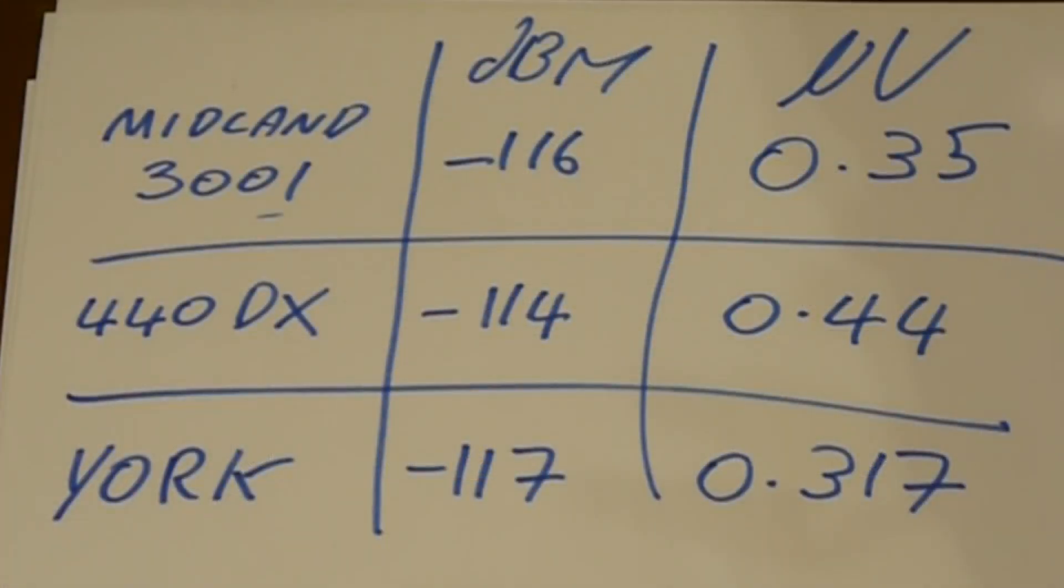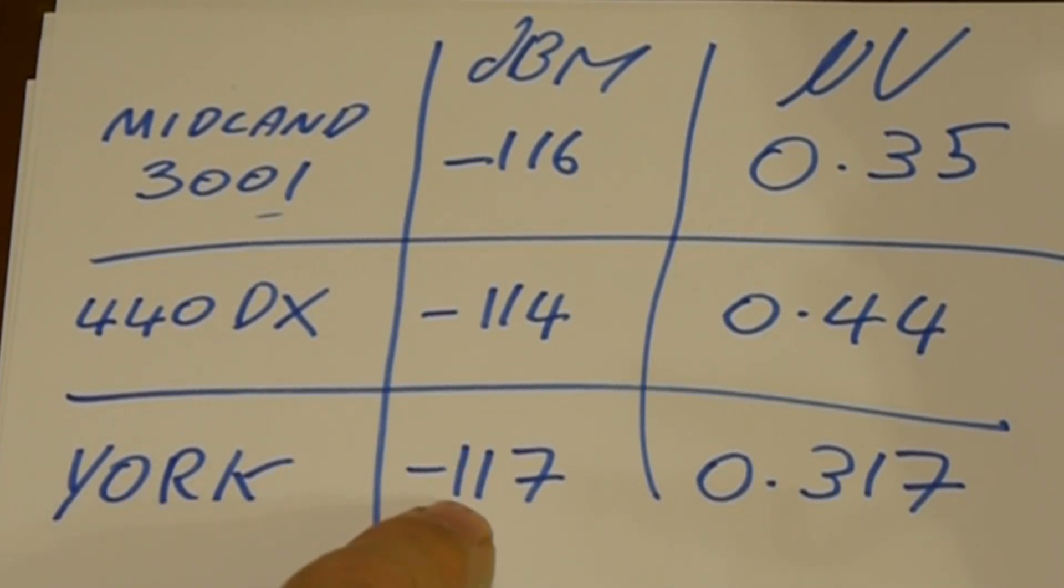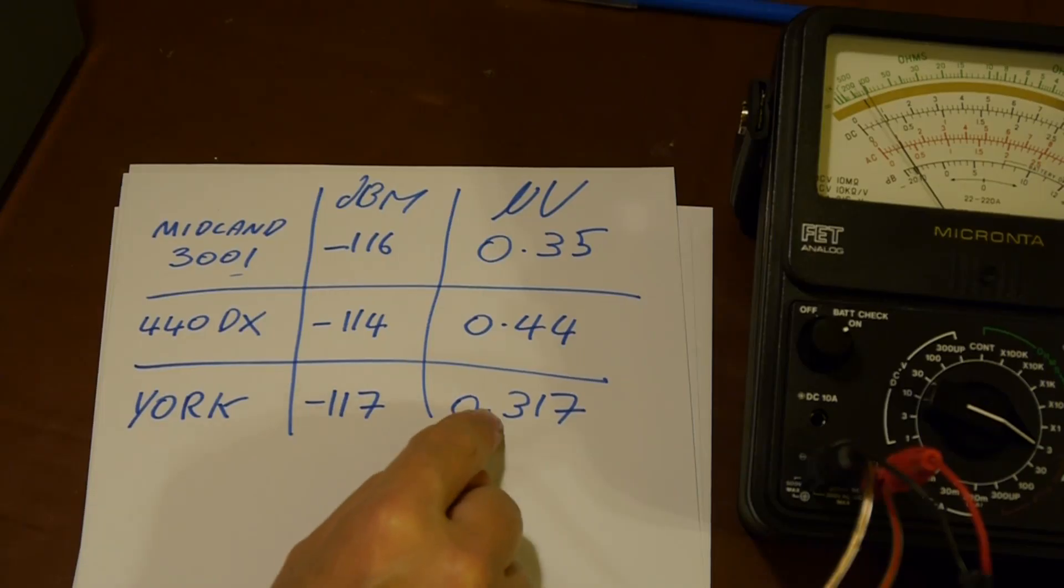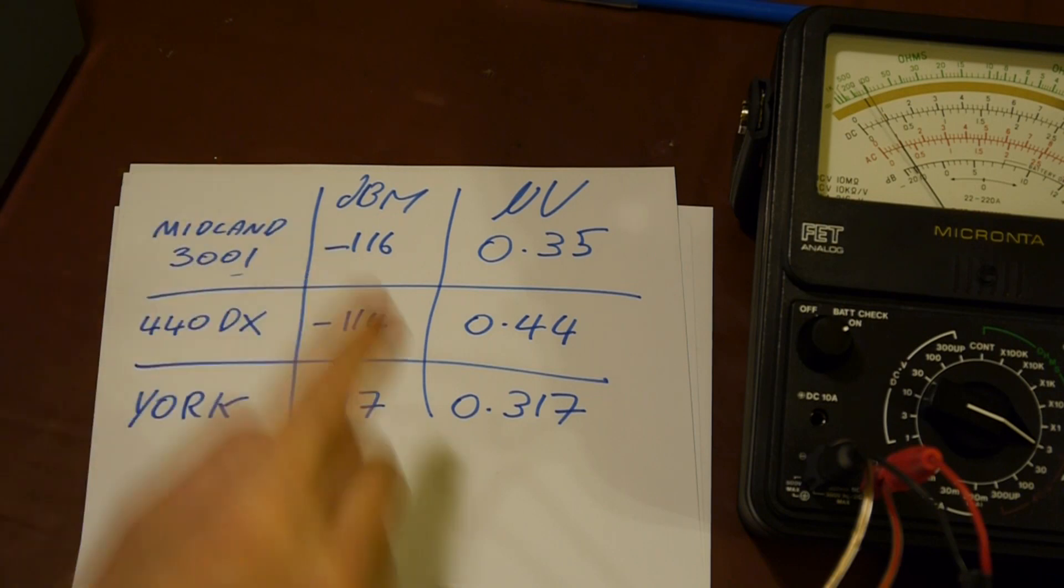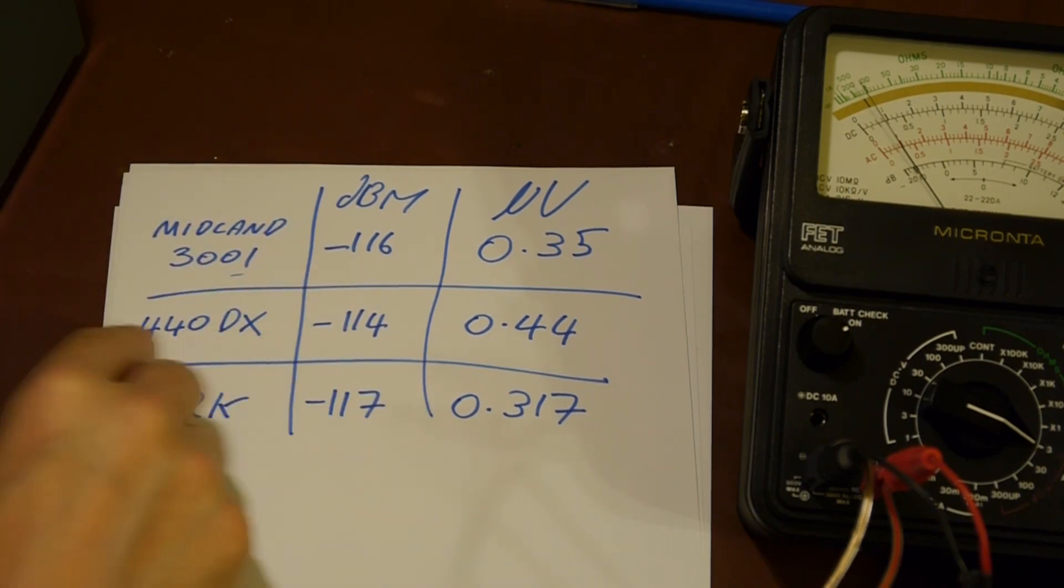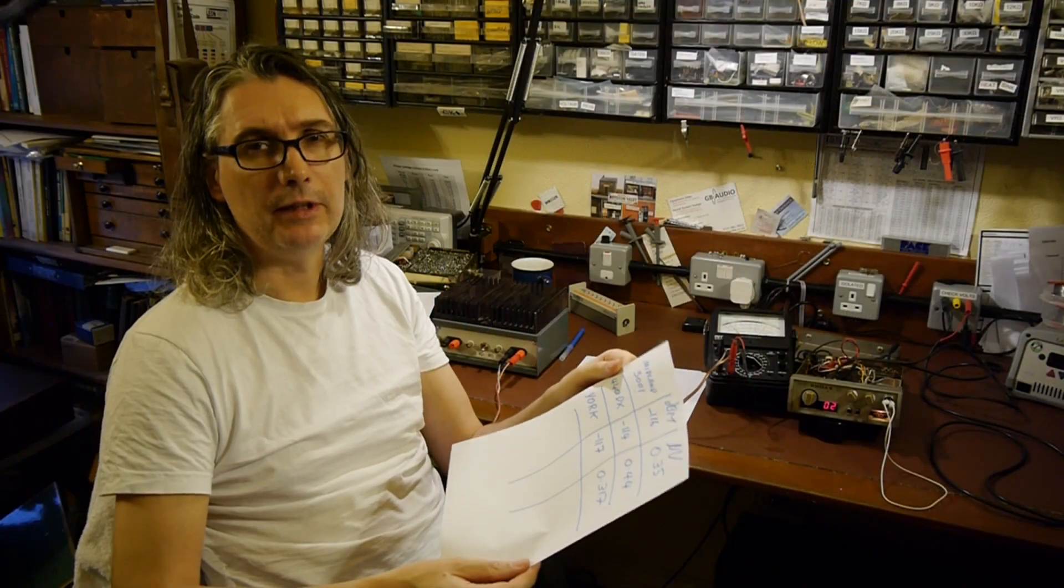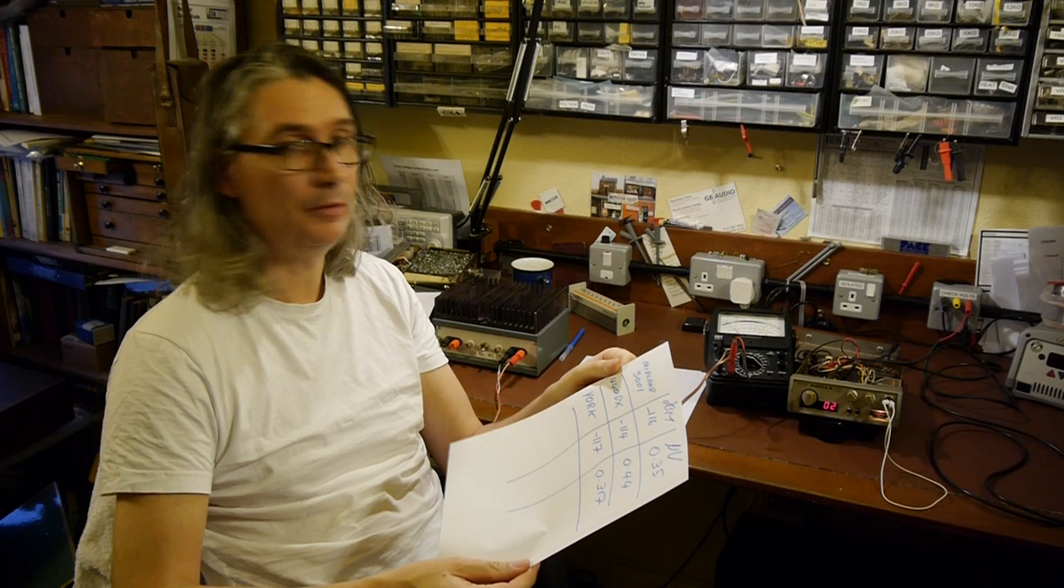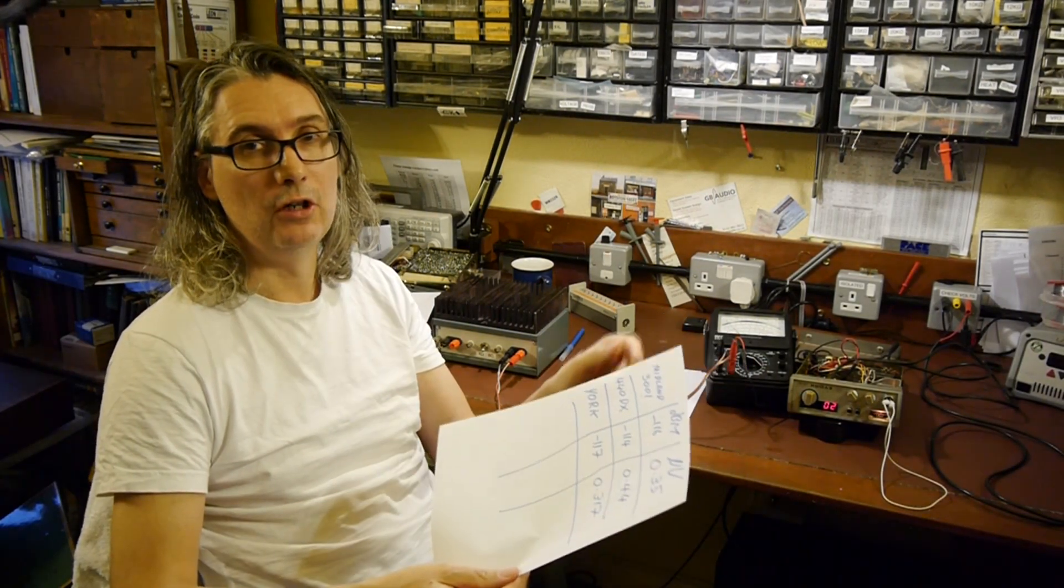Well then, well then pot pickers. We've had a bit of a shift in our lineup there. So just snuck in at number one is our York radio. Because that's come in at minus 117 dBm or 0.317 microvolts. So 0.317, that's actually lower than the 0.35 achieved by the Midland 3001. So Midland 3001 is now in second place. And the 440DX is now in third place. Well I don't know about you but I wasn't expecting such good performance from a bunch of crap old CB radios. I mean these haven't been worked on yet or aligned. Some of these are barely working at all.